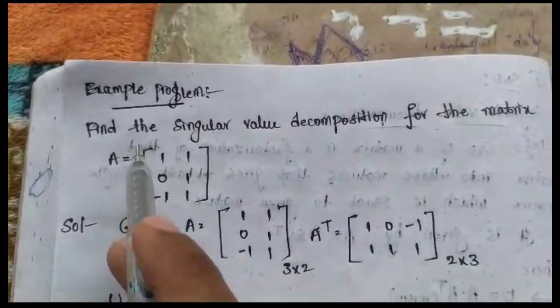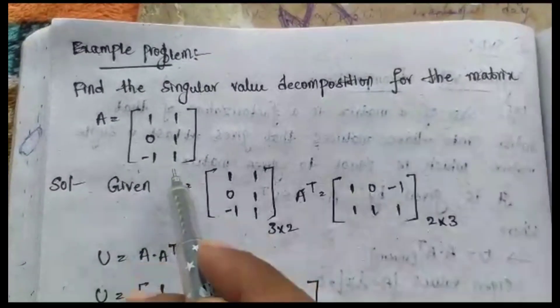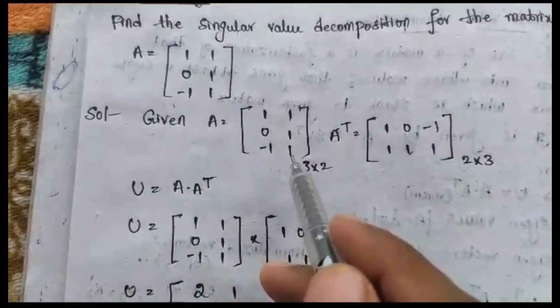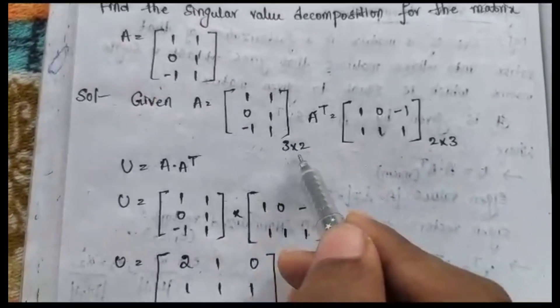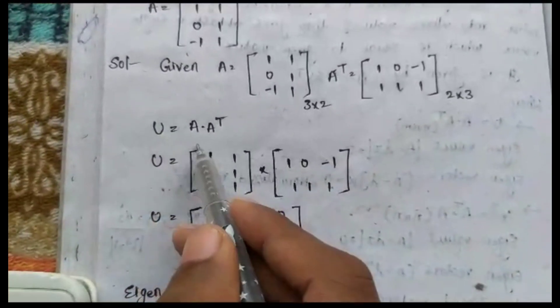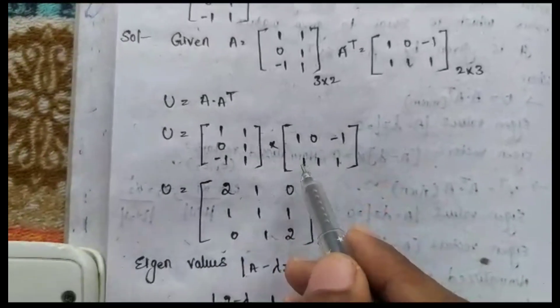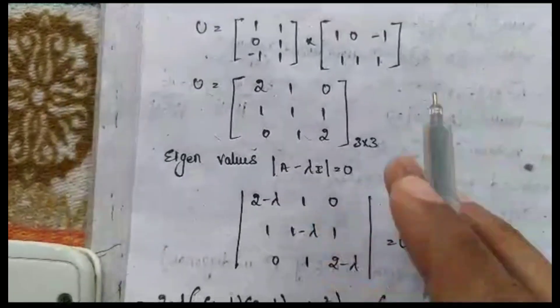Let us discuss an example problem. Find the singular value decomposition for the matrix A = [[1, 0], [−1, 1], [1, 1]]. We take the given A matrix and transpose it. The A matrix is in 3×2 form; when transposed it becomes a 2×3 matrix. We compute U = A·Aᵀ and get the 3×3 U matrix: [[2,1,2],[1,1,1],[2,1,2]].